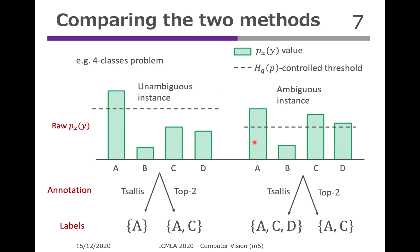When we compare the two annotation methods — top-K labeling and Tsallis entropy-based labeling — there are some differences in their behaviors. The first step is the same: an annotator sees an instance and unconsciously and instinctively builds a probability distribution, then selects classes according to the two methods, and we receive the generated labels. In a four-class classification problem, where K is 2, in Tsallis entropy-based labeling we only receive one label, A, for an unambiguous instance, whereas we have more labels A, C, D for an ambiguous instance. By contrast, top-2 always generates two labels for any instance.